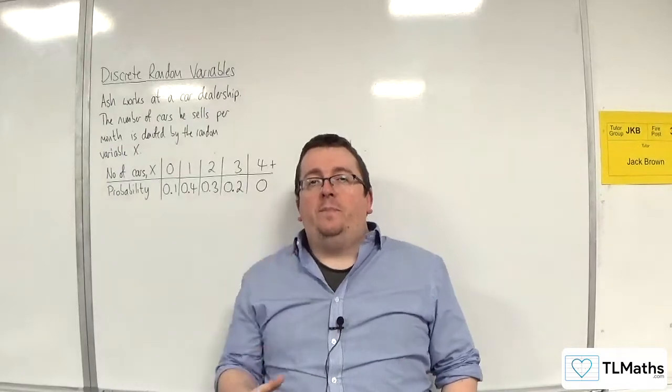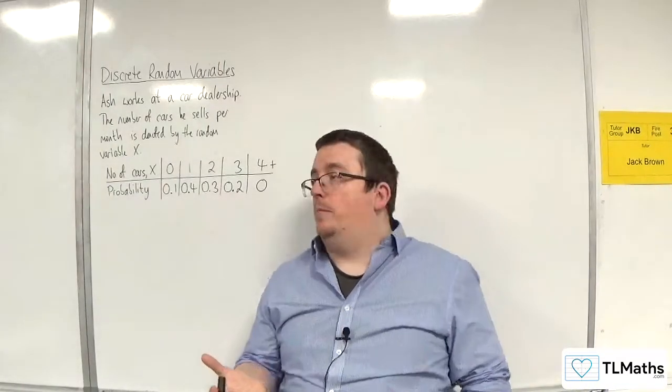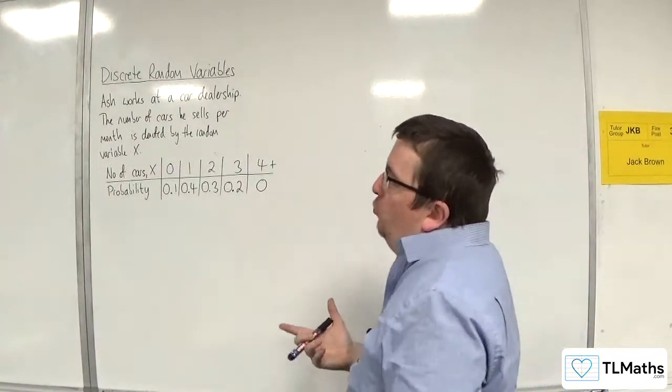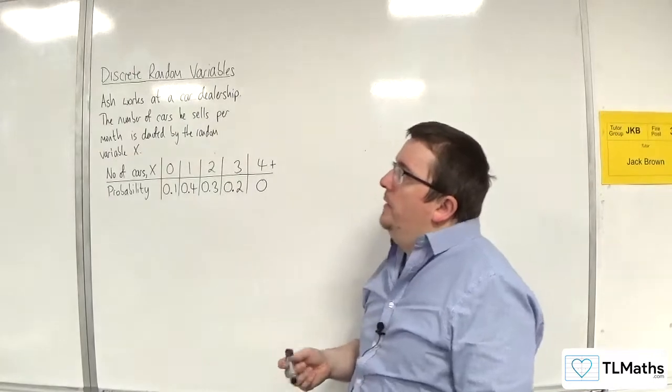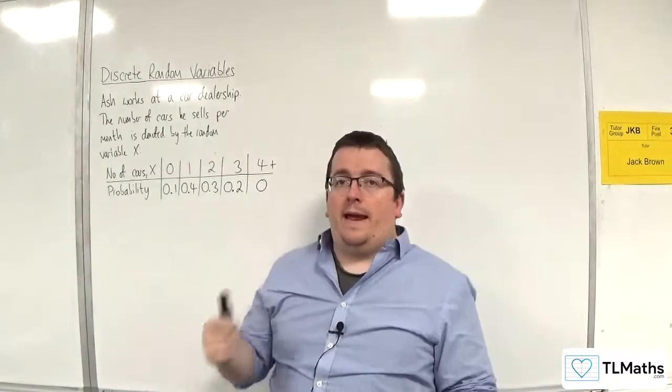So, in this video, we're going to do a little bit of exploration about E of X and some of its properties. So, we've got a situation here. We've got Ash works at a car dealership. The number of cars he sells per month is denoted by the random variable X.